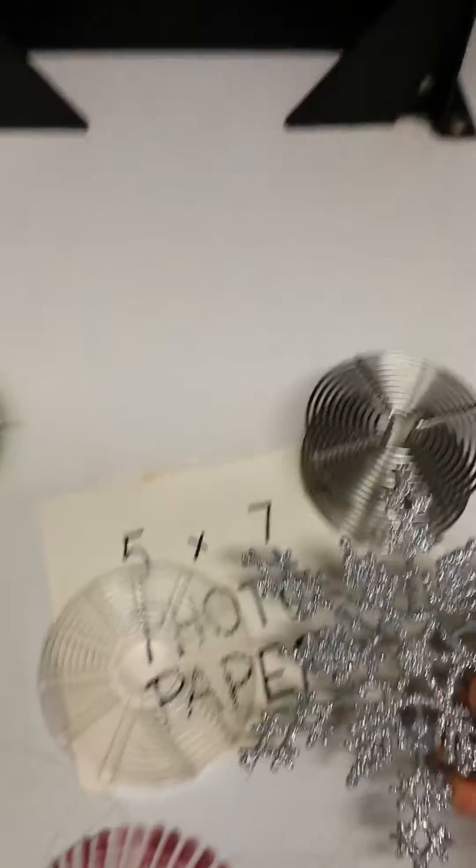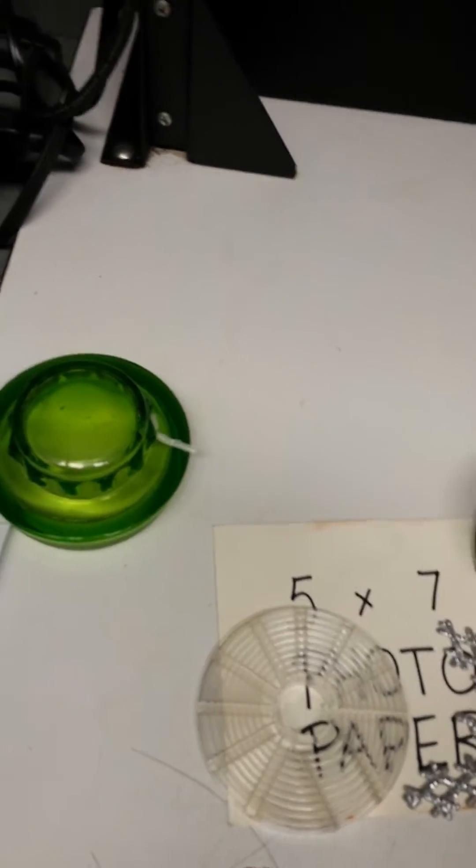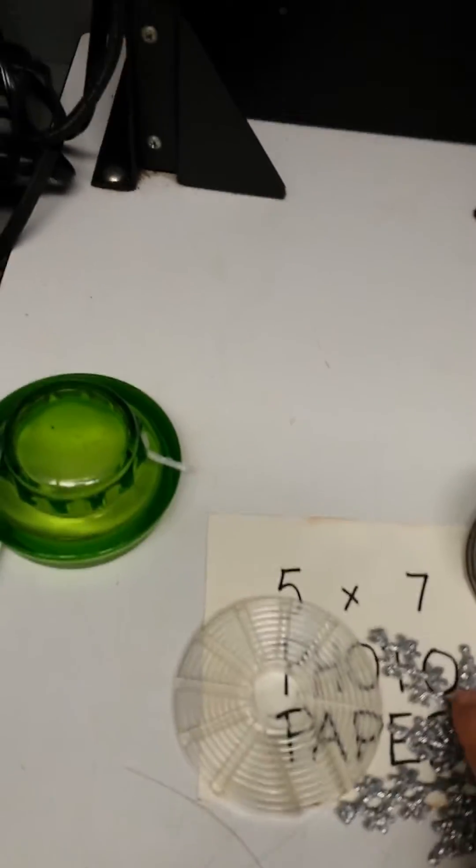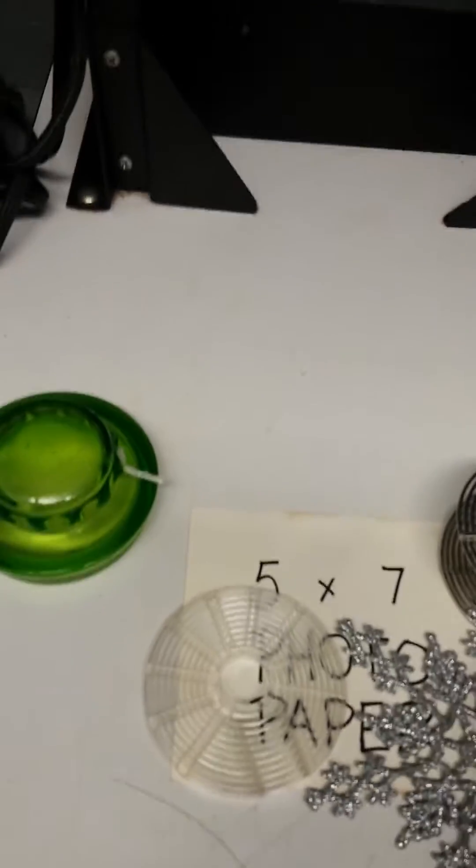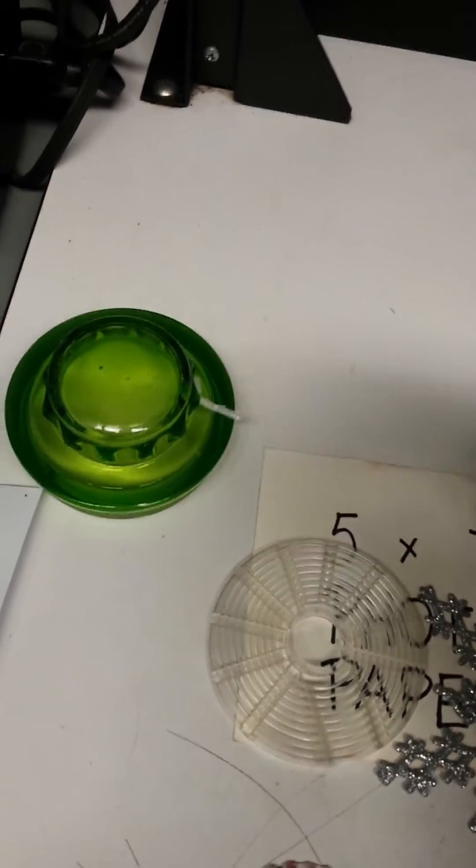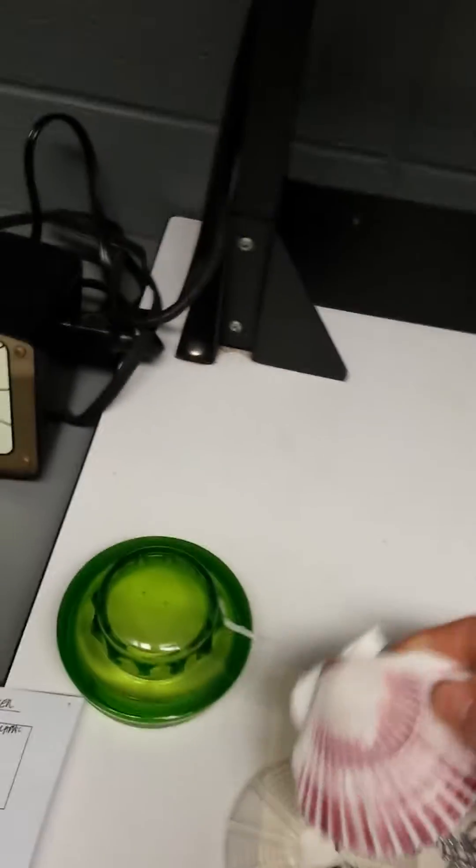that's going to give you, obviously, wherever it hits on the paper, wherever this is, it's going to be white. And wherever it's not hitting, it's going to be black. So obviously, this is going to give me black. And I'm not quite sure what this shell is going to do because it is a little bit translucent.